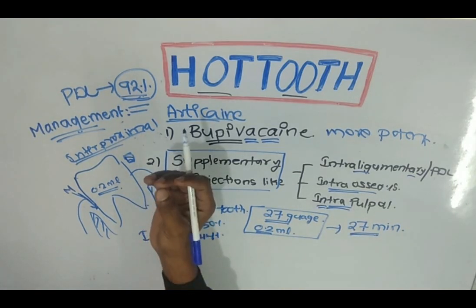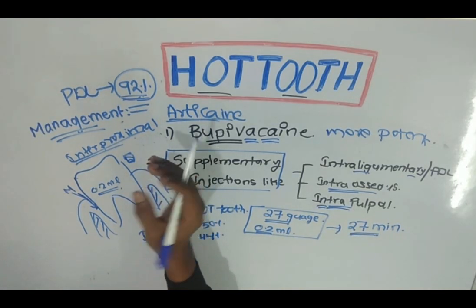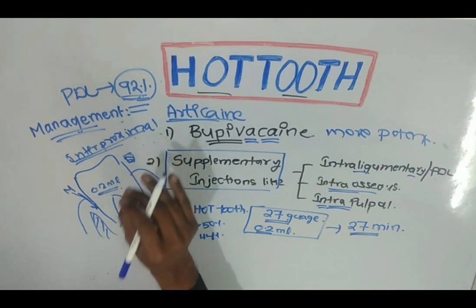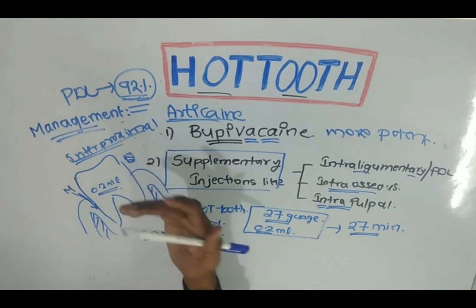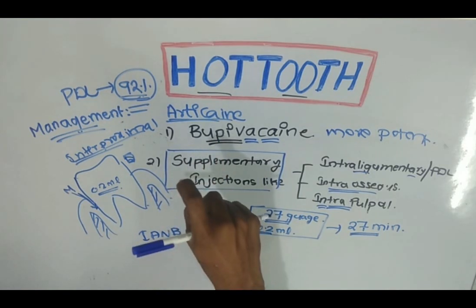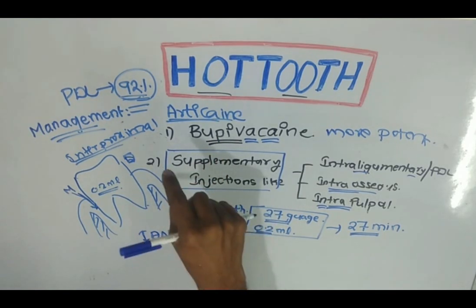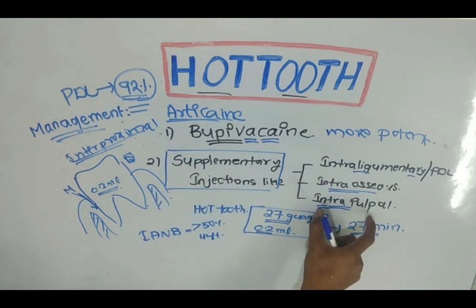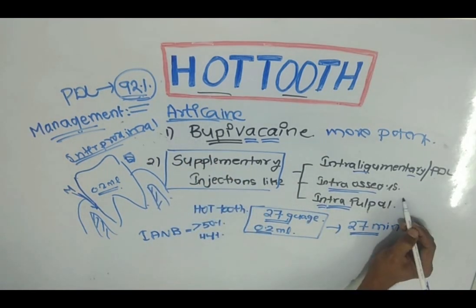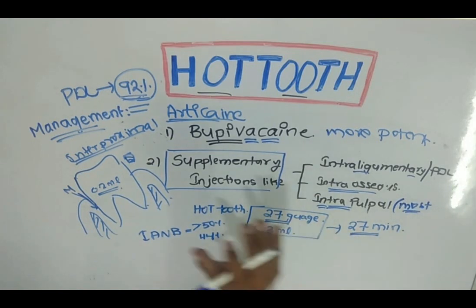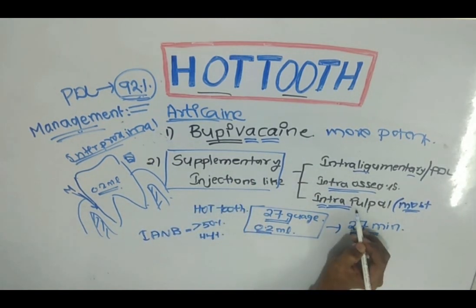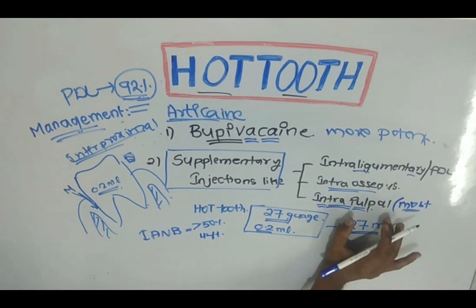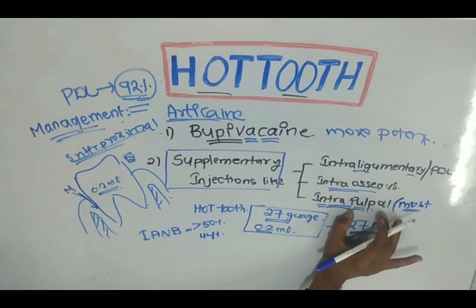Coming to the intrapulpal injection: when you expose a pinpoint exposure of the pulp while doing an access cavity, you take a syringe and insert the needle into that exposure site to achieve pulpal anesthesia. It is the most efficient technique for achieving pulpal anesthesia, but it is a painful injection, so care should be taken.